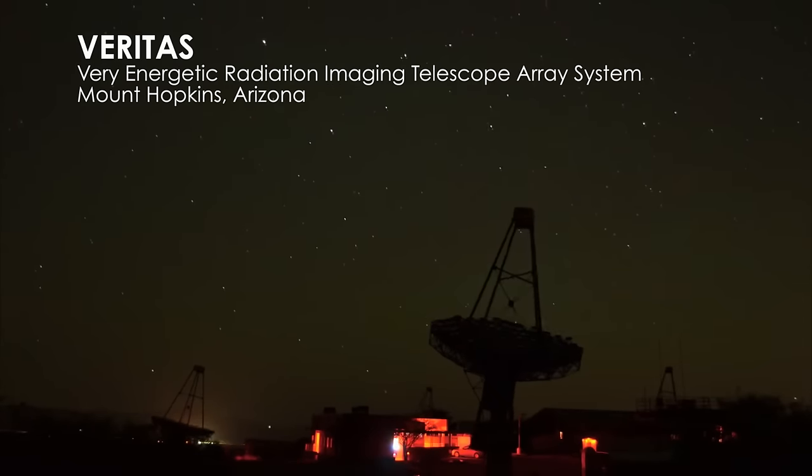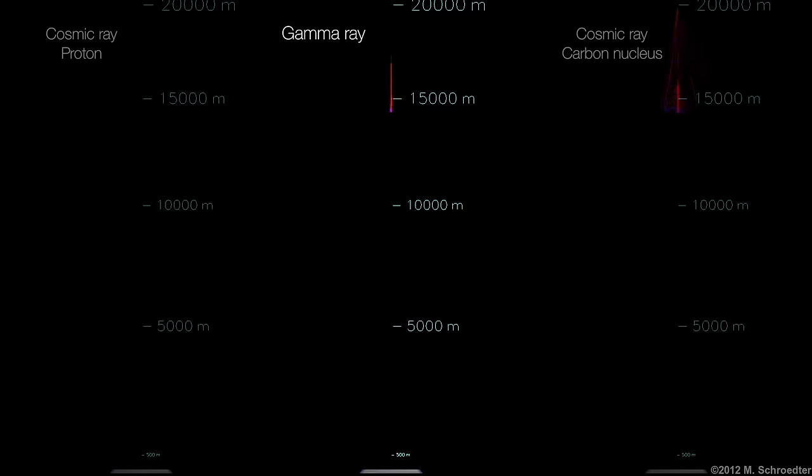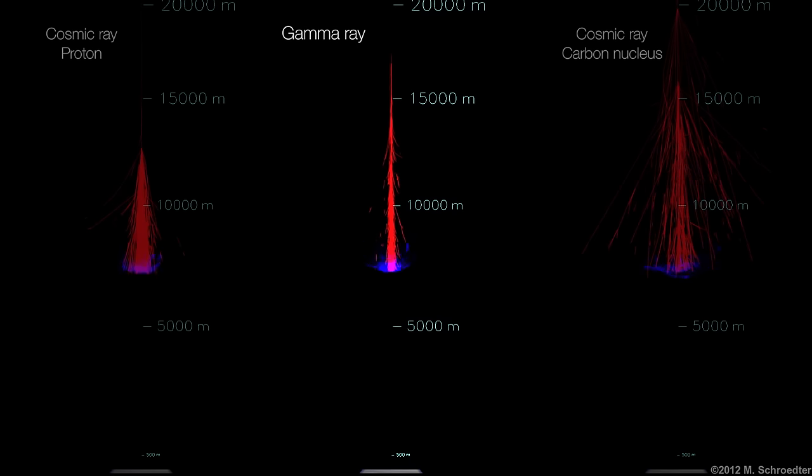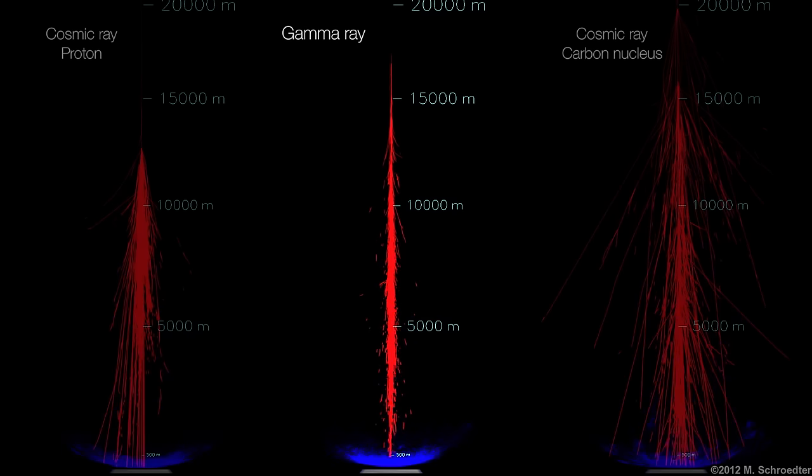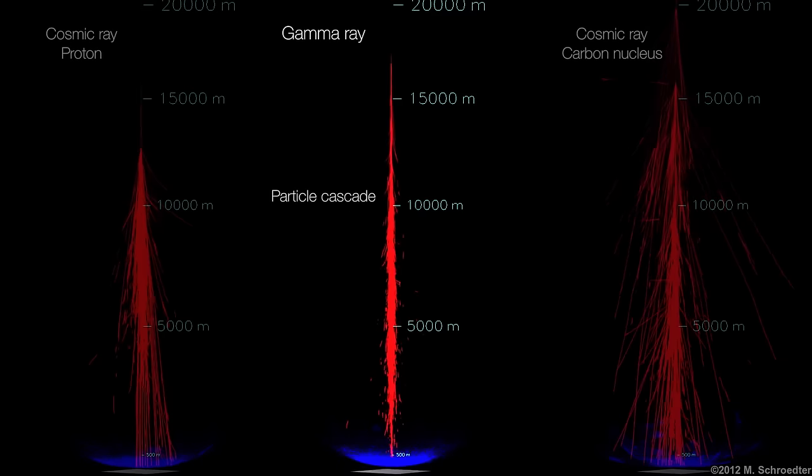Both MAGIC and VERITAS work by catching faint flashes of visible light produced when a high-energy gamma-ray strikes the upper atmosphere. This creates a shower of fast-moving charged particles that emit a glow called Cherenkov radiation.